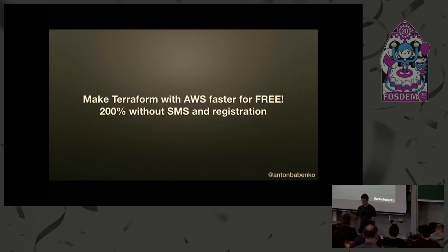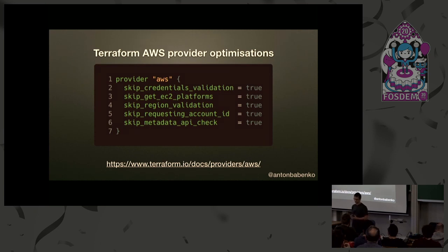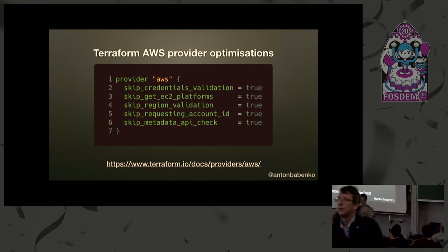First tip: make Terraform with AWS faster for free. If you specify in the provider that you want to skip credential validation, region check, and metadata API check, you'll reduce API calls from around 10 down to 1. If you're on a slow network like on an airplane, this helps a lot — you can even work with Terraform offline. This is documented, so it's not a hack.